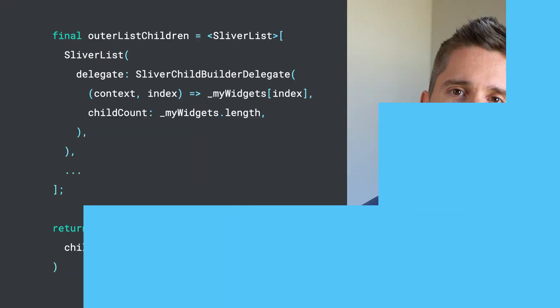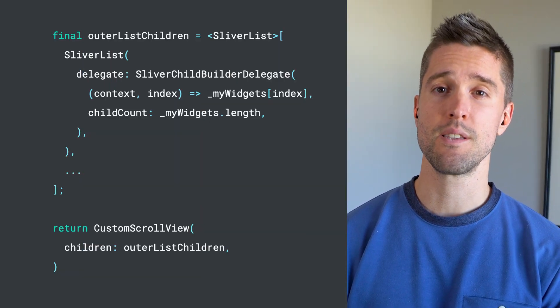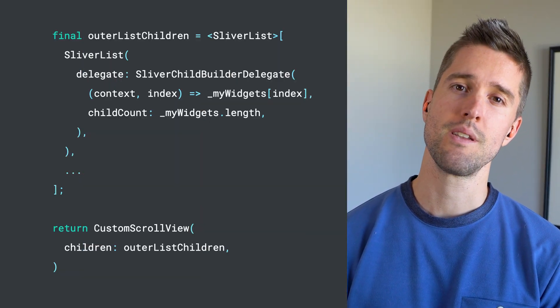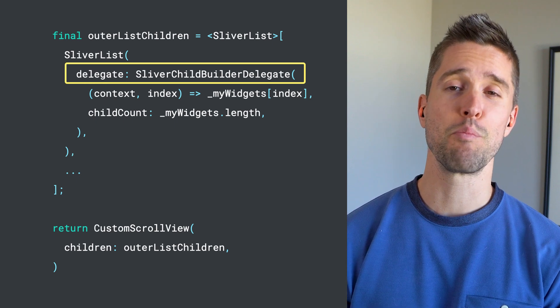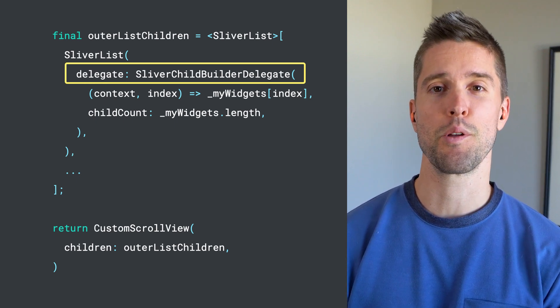Now I don't know about you, but delegates always make me think something scary is about to happen. But luckily, this one isn't scary. If you're converting from inner ListView.builders, a great choice is the SliverChildBuilderDelegate because it looks so similar.